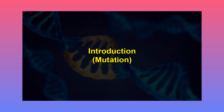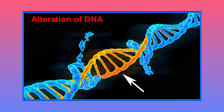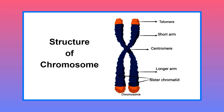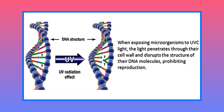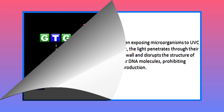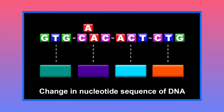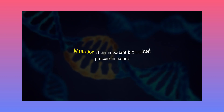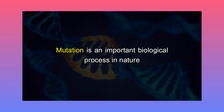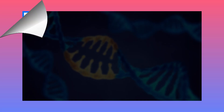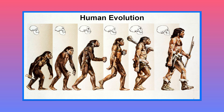Let's first start with the introduction to mutation. A mutation is a change or alteration happening in a DNA molecule, gene or chromosome due to intrinsic or extrinsic factors such as an error in replication or exposure to UV light respectively. Changes in the nucleotide sequence of the DNA is called a mutation. The mutation is an important biological process in nature. It can be helpful or harmful. For instance, the mutation creates variations in nature by providing new alleles and hence helps in evolution.